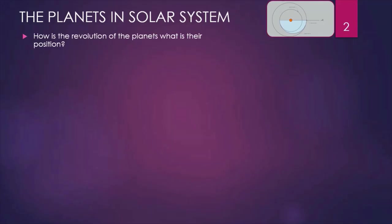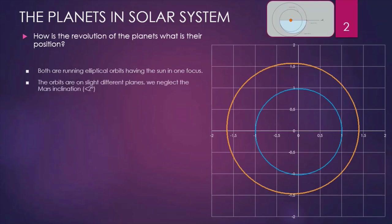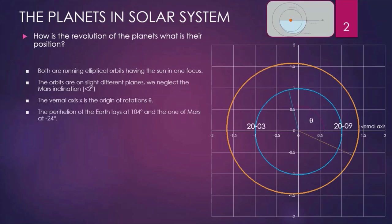Which position are the planets occupying in the solar system? We know from Kepler's first law that their orbits are elliptical and the Sun is occupying one of the foci. The orbit of Mars is also not laying on the same plane — its inclination is about 2 degrees, but we are neglecting this now. For the origin of rotations, we are considering the vernal axis, which crosses the Earth's position at 20th of March and 20th of September. Moreover, the position of the perihelion of the two orbits is at 104 degrees for Earth and minus 24 degrees for Mars.